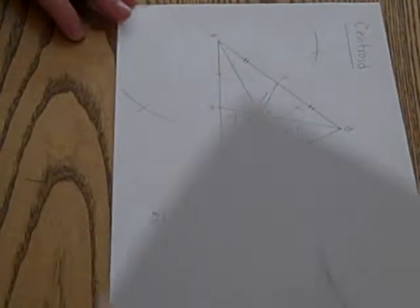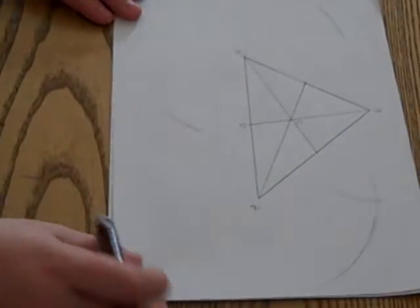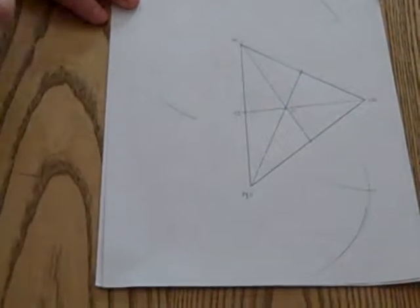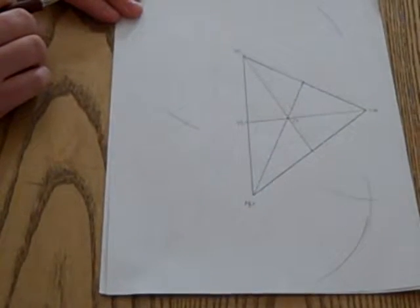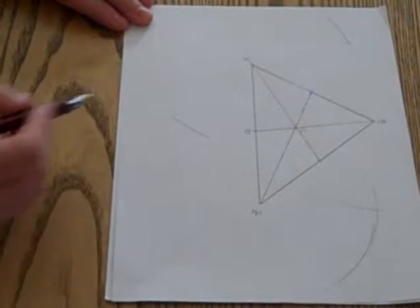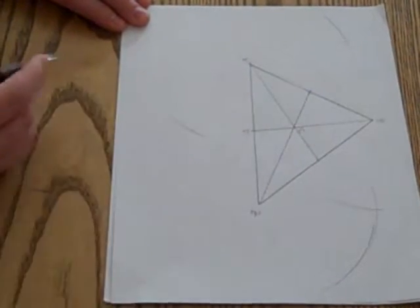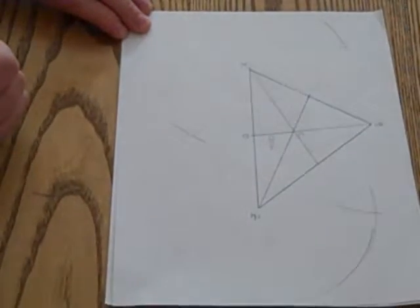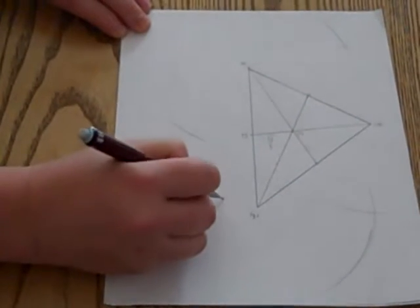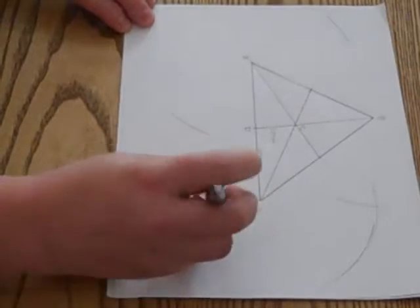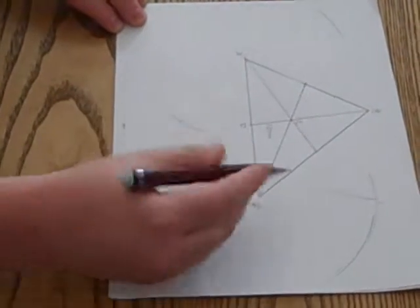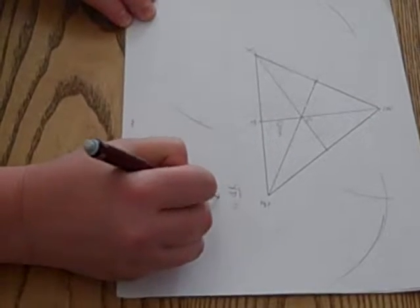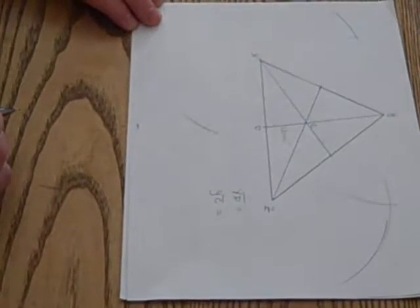Let's take a look at another triangle. Here I have triangle XYZ, and I have the point C as my centroid. Suppose we know that segment CD is 12 centimeters. Then what do we know about segment YD? And what can we say about segment YC?